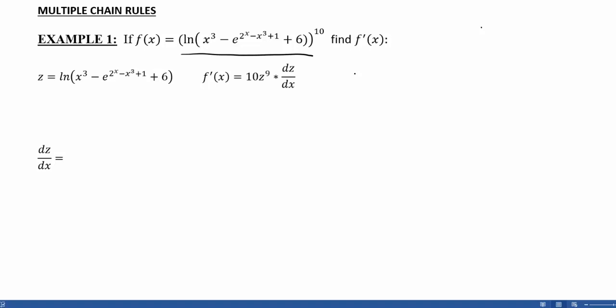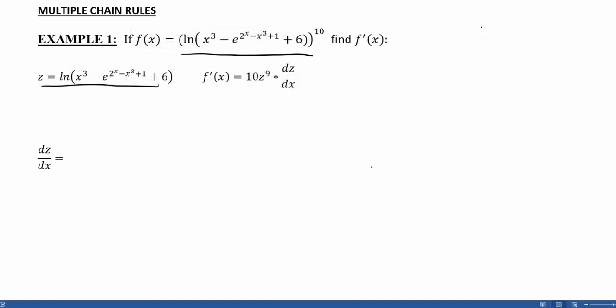We're going to let z be whatever is inside the parentheses that's raised to the power. So z is going to be the natural log of x cubed minus e to the (2 to the x minus x cubed plus 1), plus 6. Our shortcut tells us that the derivative of our original function should be 10z to the 9th — the power comes down, subtract 1 from the power — times dz/dx, the derivative of z with respect to x.